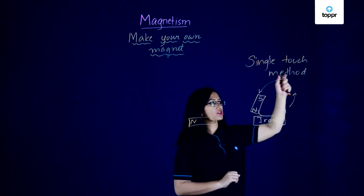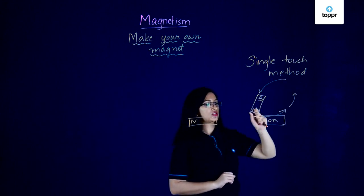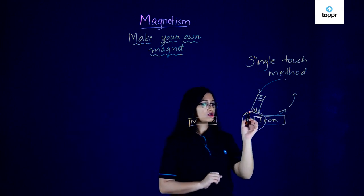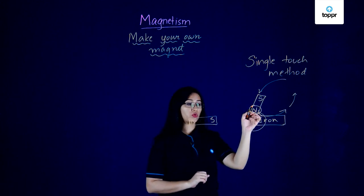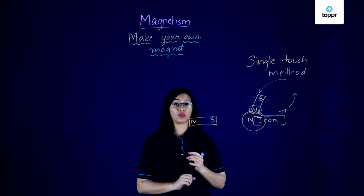You keep rubbing it on the top like this while stroking the iron or the substance that you want to magnetize. If you keep repeating this, the end that is closest to the north pole of the permanent magnet will slowly start to develop a north pole itself.